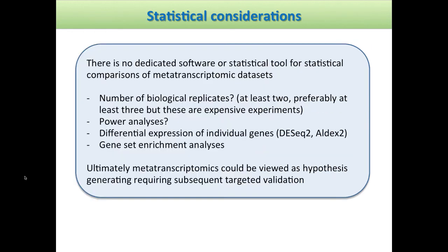What about statistical considerations? Metatranscriptomics is lagging behind metagenomics and 16S datasets. There's really no dedicated statistical tool for comparing metatranscriptomic datasets — we're really reliant on existing tools for RNA-seq datasets. Number of biological replicates, as I mentioned, we need at least two, preferably at least three, but these are expensive experiments. This is really reducing people's options in terms of how many biological replicates and what kind of questions can actually be addressed. Power analyses — we have no idea how we're doing those at the moment.